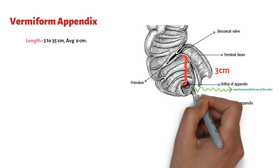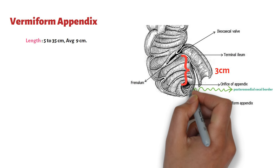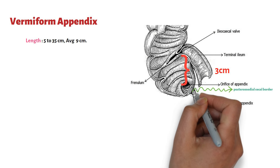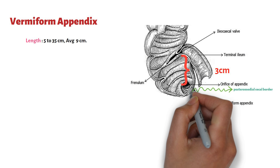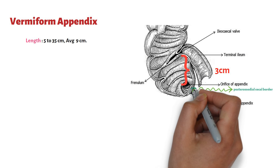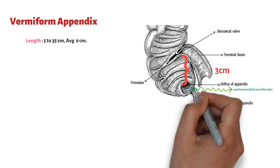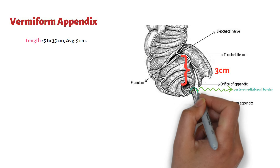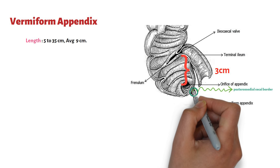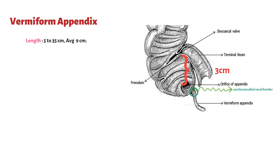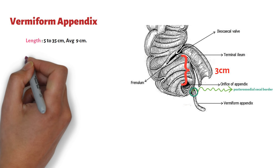Although the relationship of the base of the appendix to the cecum is essentially constant, the remaining part of the appendix is free, which accounts for its variable location in the abdominal cavity.